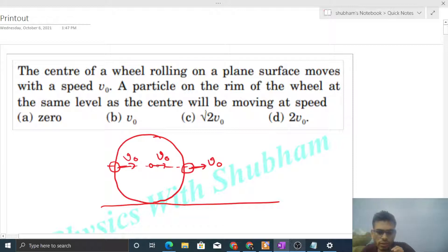In pure rolling, what happens? When rotation occurs about the center of mass, this also creates a speed. How does it arise? If this is rotating with omega...